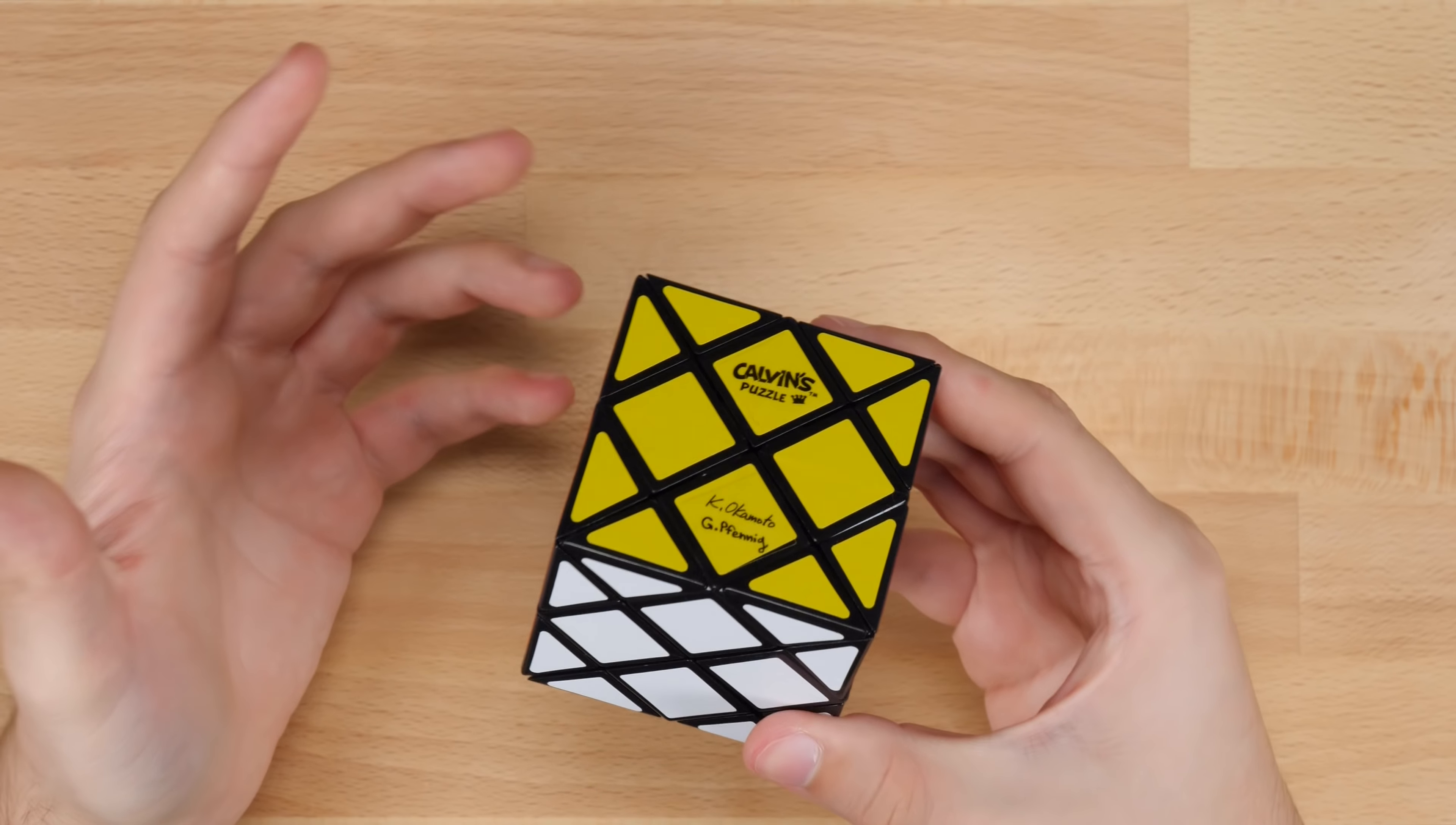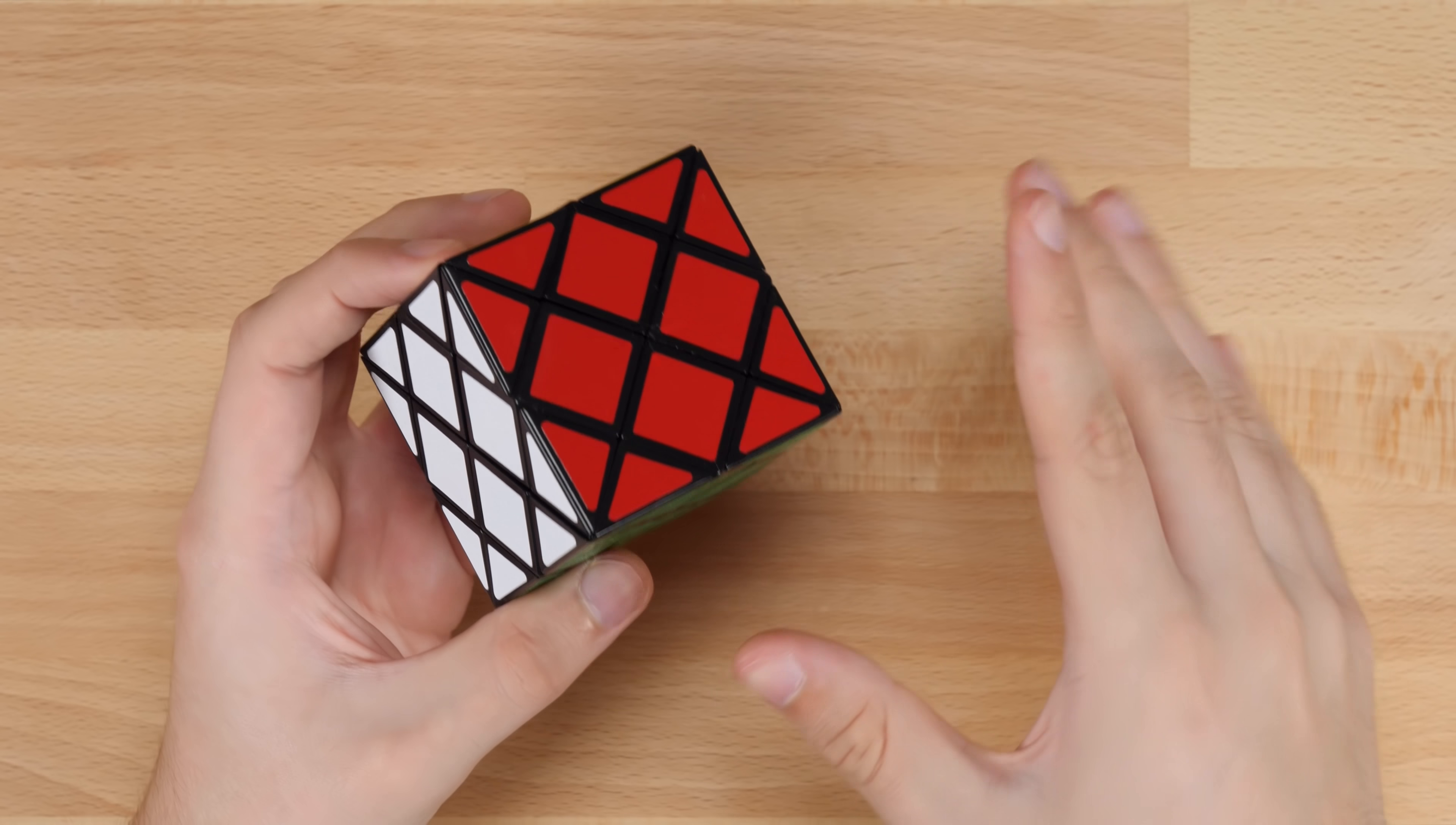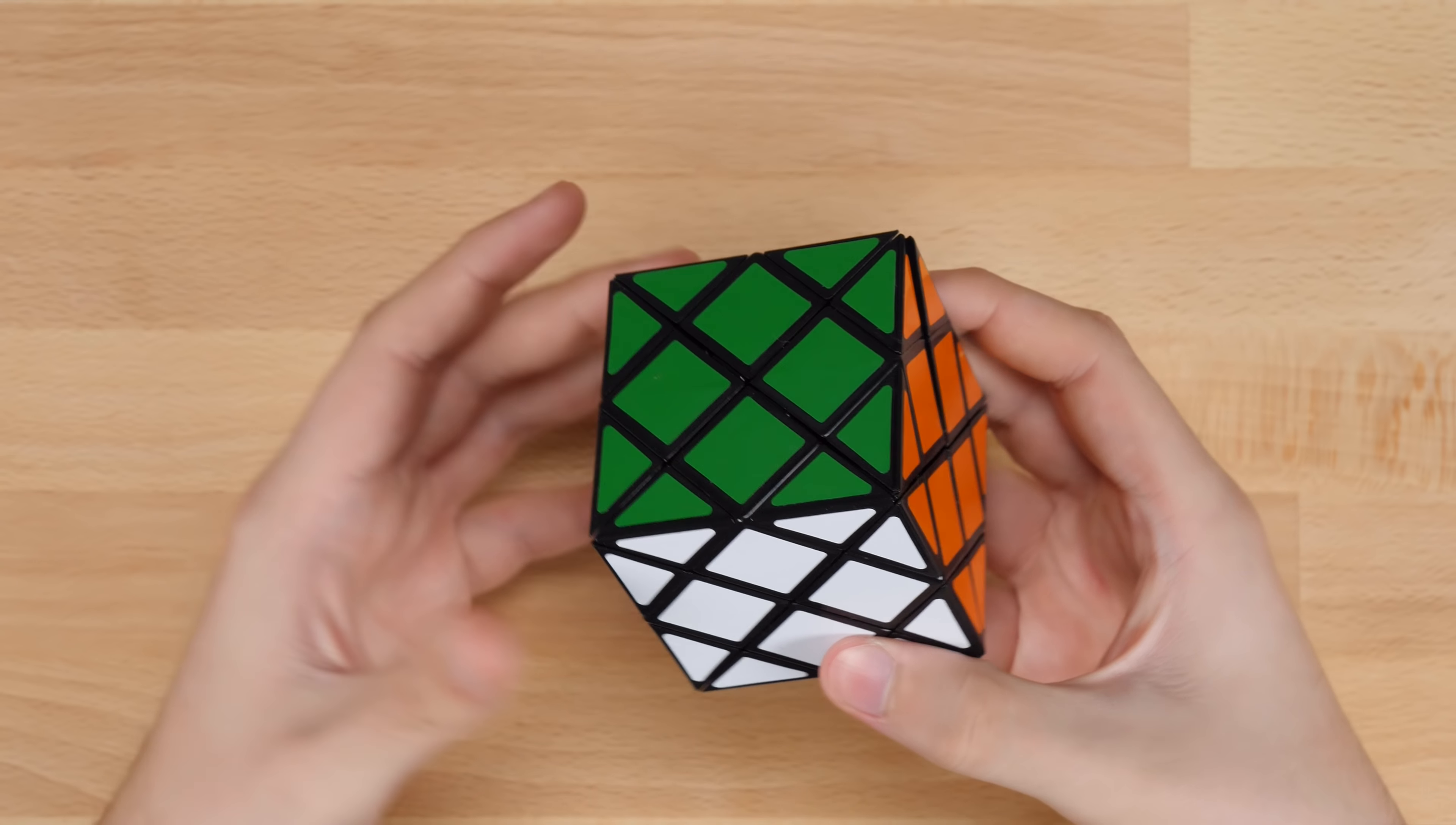This puzzle is also quite a bit bigger than you might expect. Here it is next to a normal 3x3. It's a decent size bigger than a 3x3. Overall though, it's just a very nice looking puzzle. It's got very simple cuts and simple lines. And there's something kind of elegant about the simplicity of a puzzle like this that still has a good amount of pieces but just looks really simplistic. And it's just kind of nice.